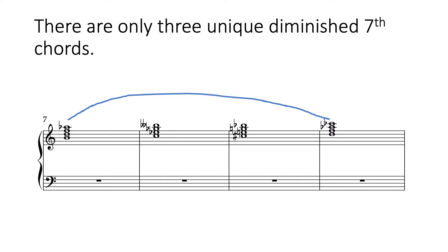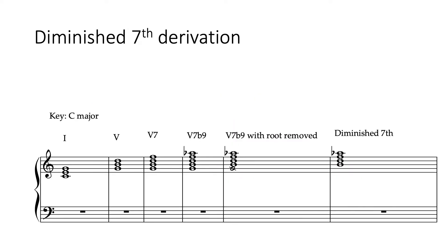In order to work out how to use them, we need to work out where they come from — from what they're derived. So here we are in the key of C major. I've written out the tonic chord first of all. And then here's the dominant chord in C major. We can understand a diminished 7th being used as a kind of dominant. So here we've got chord V, chord V7 — a dominant 7th chord. And then a common further decoration for a dominant 7th chord is to add a flattened 9th on top.